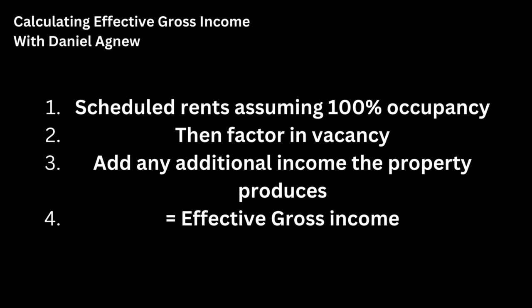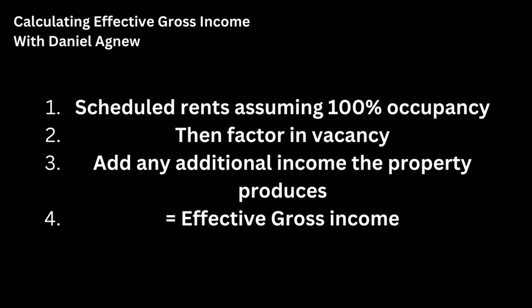If you want to break down the first part of the NOI calculation — the effective gross income — you will take your scheduled rents assuming 100% occupancy, so no vacancies. Then you'll take vacancy into account and subtract it from the scheduled rents, all annualized by multiplying by 12. You'll factor in the current vacancy or your best estimation of it, then add any other income sources like fees, laundry, vending, or parking. That leaves you with your effective gross income.